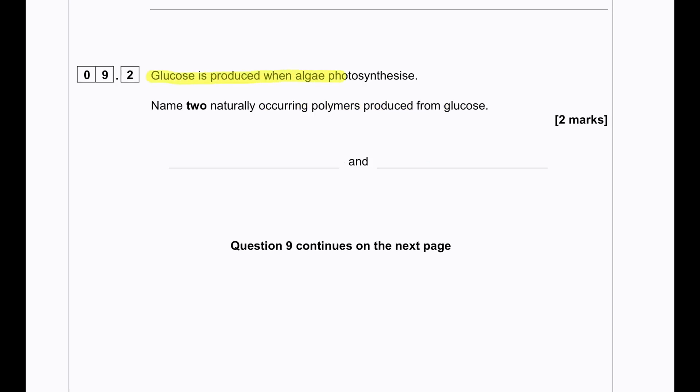Glucose is produced when algae photosynthesize. Name two naturally occurring polymers produced from glucose. So glucose, when it is polymerized, it produces either starch or it produces cellulose molecules.